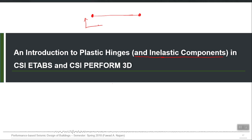In the local axis of a cross section, axis 2 and 3, M3 is the primary bending moment for a particular beam in which we are interested. So M3 versus theta3, to be more precise, will be the plastic hinge property which we can assign to both ends.